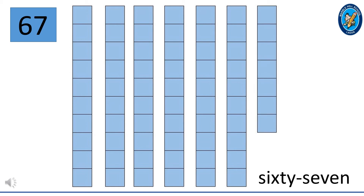This is 67. 6 and 7 make 67. 67 is made up of 6 ten-squared blocks and 7 squares. That means 60 plus 7 is 67. Can you see the number name located at the bottom right of your screen?